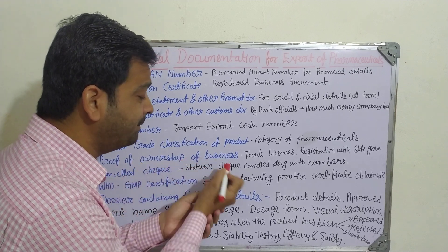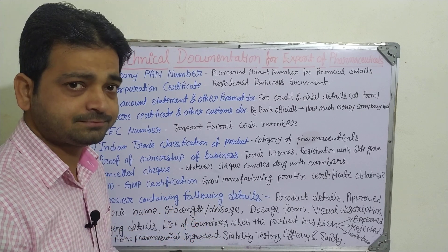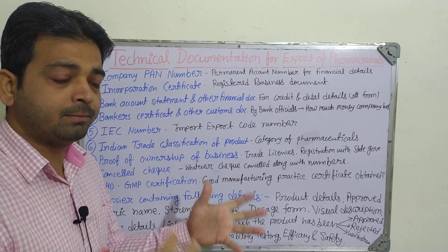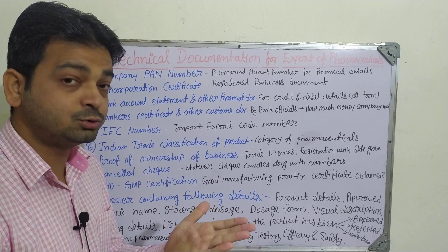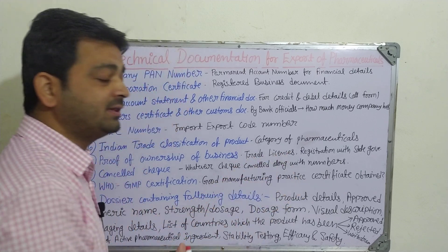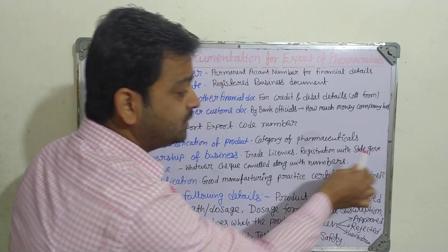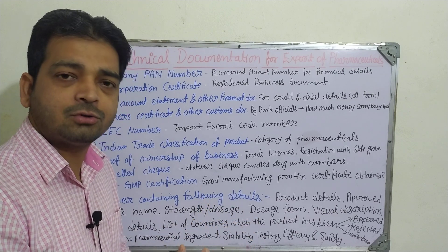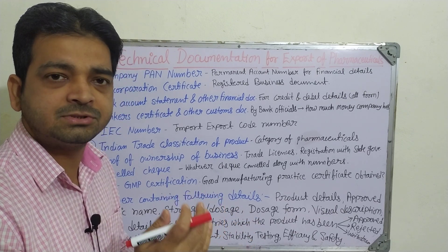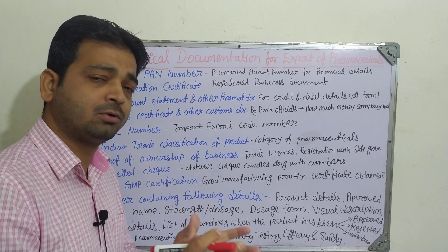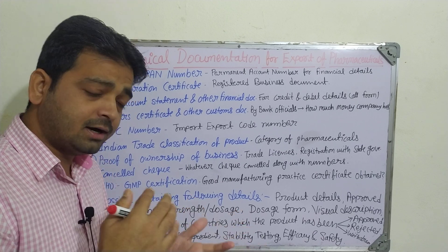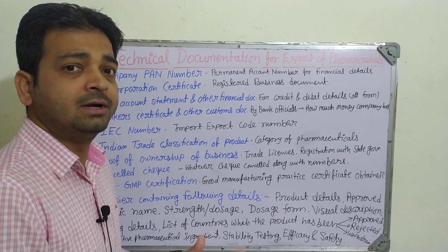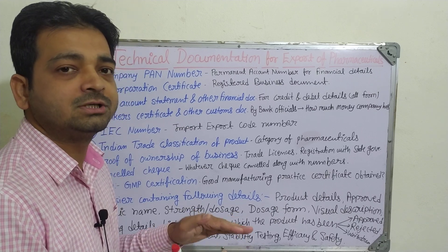The seventh one is proof of ownership of business — proof that it is your product and your business. This includes the trade license, registration with the state government. Even if you open a small general store, you need written permission from the municipal corporation. Similarly, the registration certification with the government showing this is your company and your ownership is required when going for export.